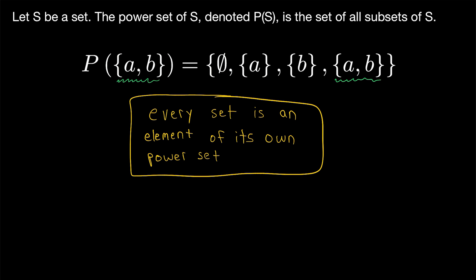We've got the empty set, the set containing a, the set containing b, and then again, the set itself. Once more, this is no coincidence. Every set is an element of its own power set, and it's pretty easy to see why.